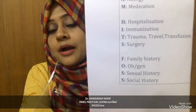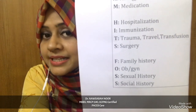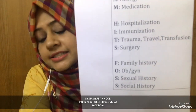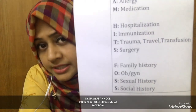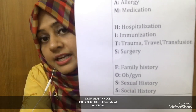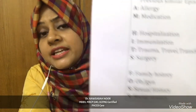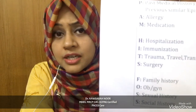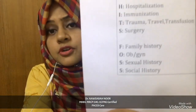The last mnemonic of this box is FOSS. F for family history — does anyone in the family have a similar complaint? O for OBGYN, for female patients — last period, regularity, any difficulty getting pregnant, age of last child. S for sexual history — we don't take full details for every patient, but if we suspect HIV, we ask about gender preference, other partners, safe sex practices, and prior HIV status checks.